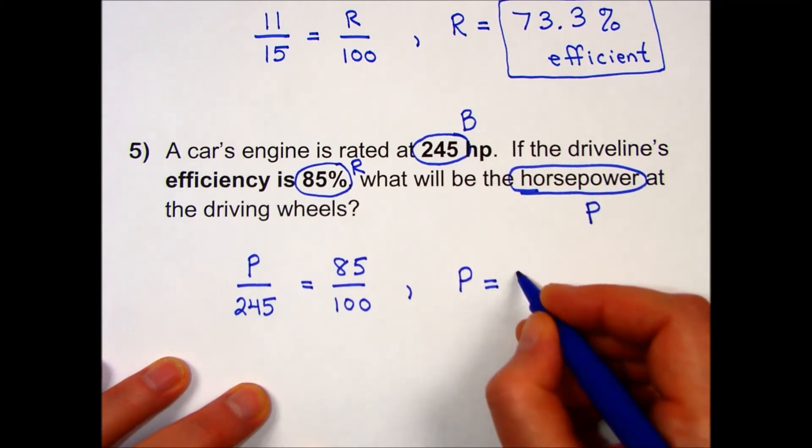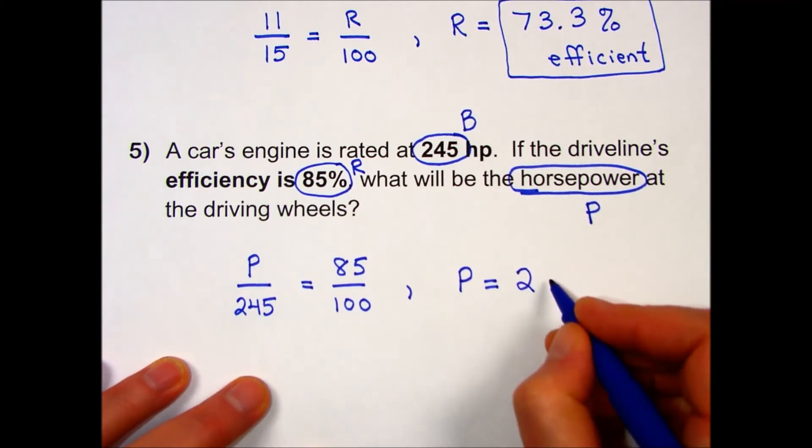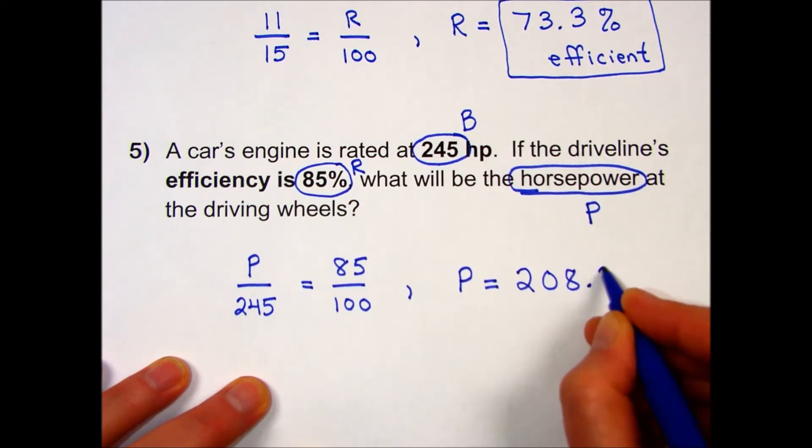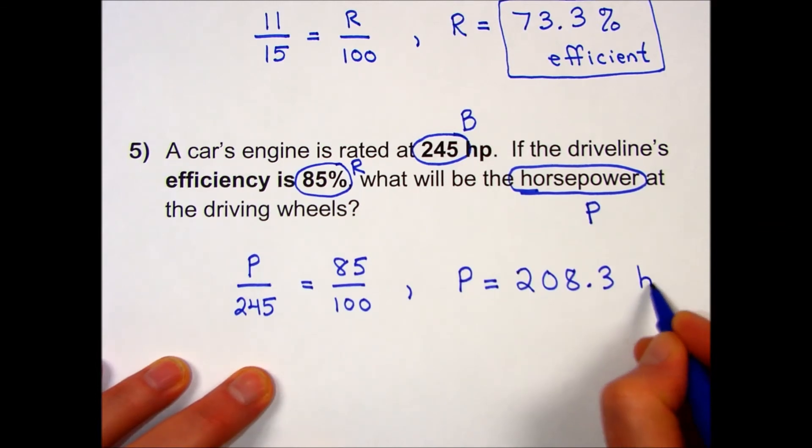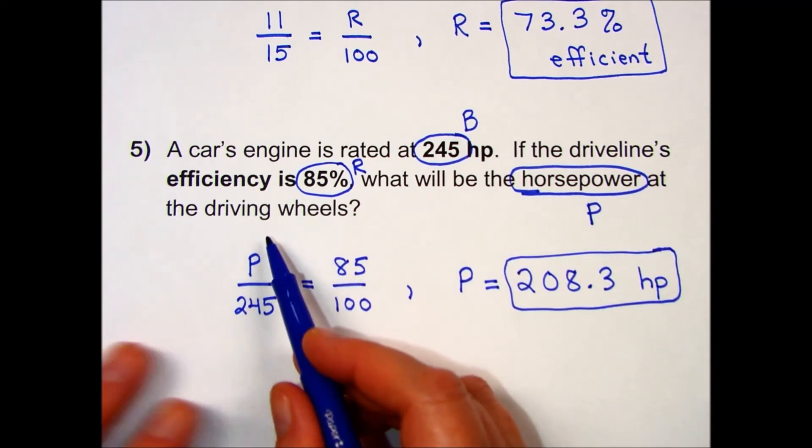When I perform these operations on my calculator, my answer is 208.3 rounded to the nearest tenth, and the units are horsepower. 208.3 horsepower delivered to the driving wheels.